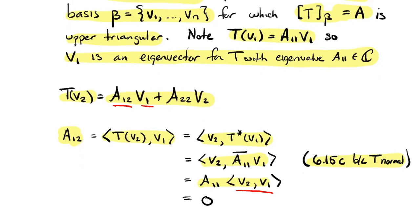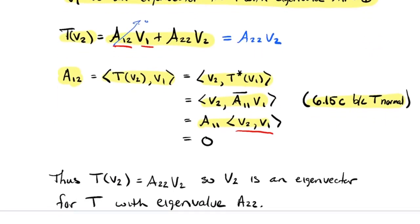Since A₁₂ equals zero, T of V2 reduces to A₂₂ times V2. So V2 is also an eigenvector, with eigenvalue A₂₂.